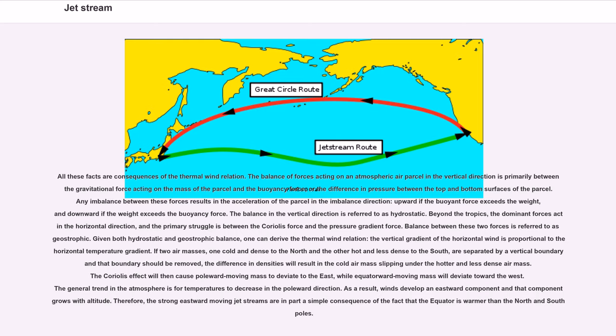If two air masses, one cold and dense to the north and the other hot and less dense to the south, are separated by a vertical boundary and that boundary should be removed, the difference in densities will result in the cold air mass slipping under the hotter and less dense air mass. The Coriolis effect will then cause poleward moving mass to deviate to the east, while equatorward moving mass will deviate toward the west. The general trend in the atmosphere is for temperatures to decrease in the poleward direction. As a result, winds develop an eastward component and that component grows with altitude. Therefore, the strong eastward moving jet streams are in part a simple consequence of the fact that the equator is warmer than the north and south poles.